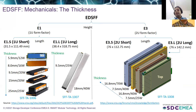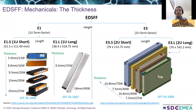On the contrary, the E3 form factor defines two different thicknesses for each of 2U short and 2U long. The thin E3.S at 7.5 mm or 25 watts is known as the E3 1T form factor, while the E3 2T form factor can go up to 40 watts. Similarly, E3.L has two thicknesses and can sustain power up to 75 watts, which falls just short of the power available from a PCIe add-in card powered by an edge connector.